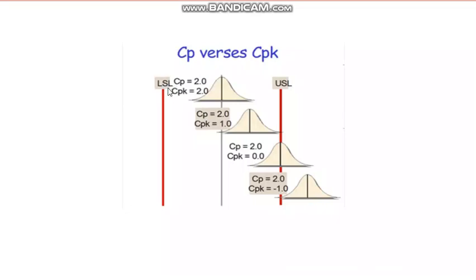Looking at a figure: we have the lower specification limit, upper specification limit, and a central line. The normal distribution with six sigma is plotted. In the first case, the distribution is centered — there is a gap on both sides — and both CP and CPK equal 2.